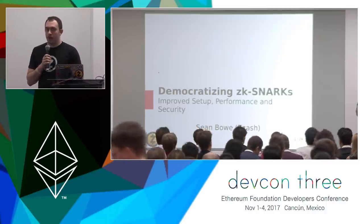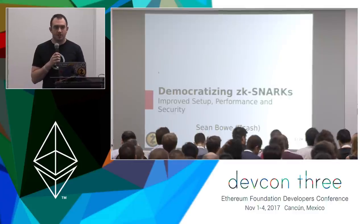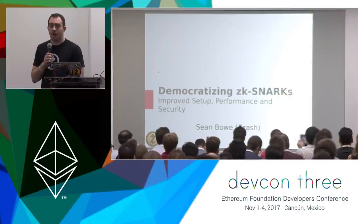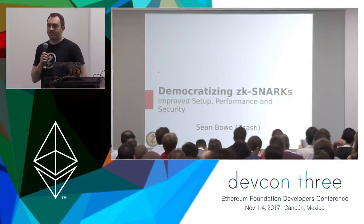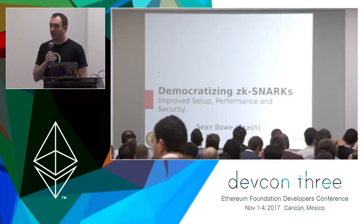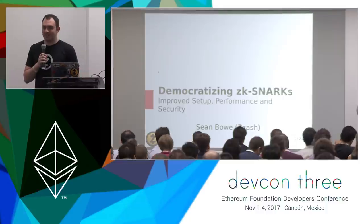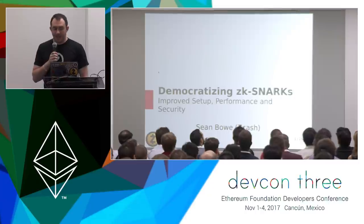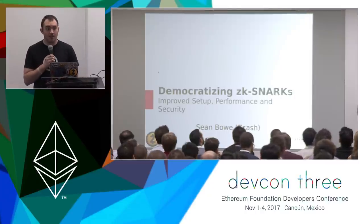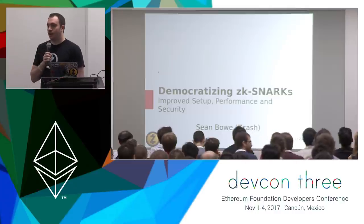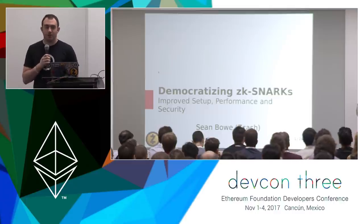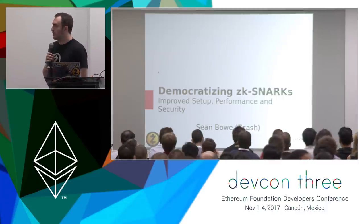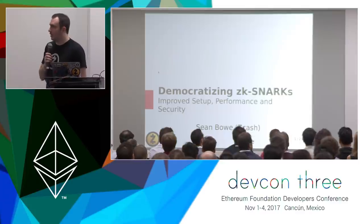Christian just did a really great job explaining how zero-knowledge proofs work and how ZK-SNARKs work. The focus of this talk is going to be on making ZK-SNARKs work in production software. At Zcash, we brought ZK-SNARKs into production last year, and it was very expensive to do that — it took a lot of engineering resources and a lot of auditing. A lot of things can go wrong, and the trusted setup is obviously the biggest thing that holds back ZK-SNARKs from being deployed in more software broadly.